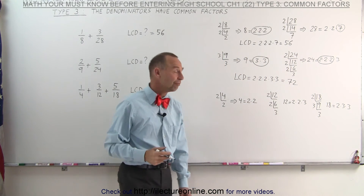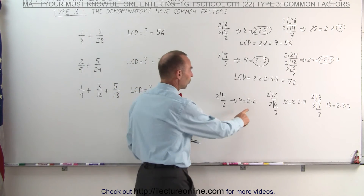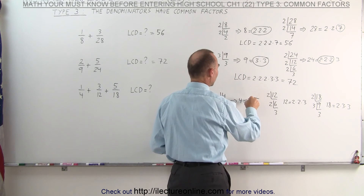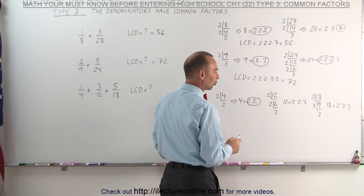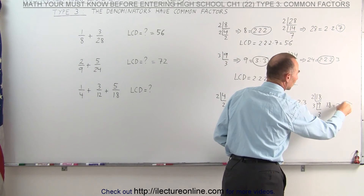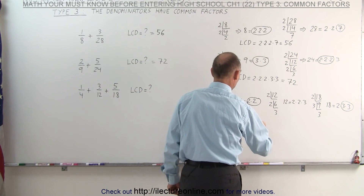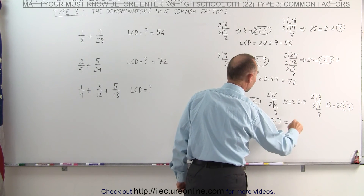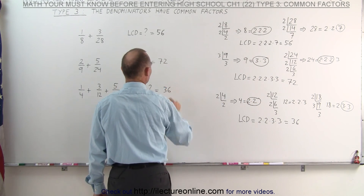Now we have 3 sets of prime factors multiplied together, and we're going to find where they occur the most. We have 2 twos here, 2 of them here, and 1 of them there, so I circle these 2. I only have to do it once, so that's enough for the factor 2. Here we have a single 3, there we have 2 threes, so we're going to circle these 2 threes. The lowest common denominator is simply the product of all the factors we circled: 2 times 2 times 3 times 3, which is 4 times 9, which is 36.